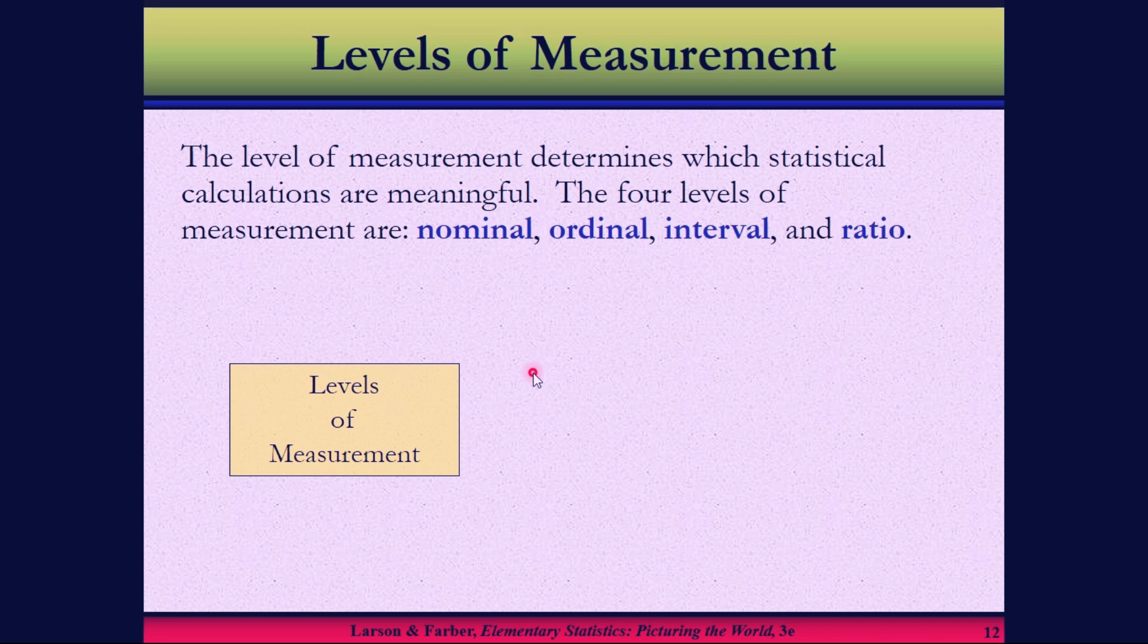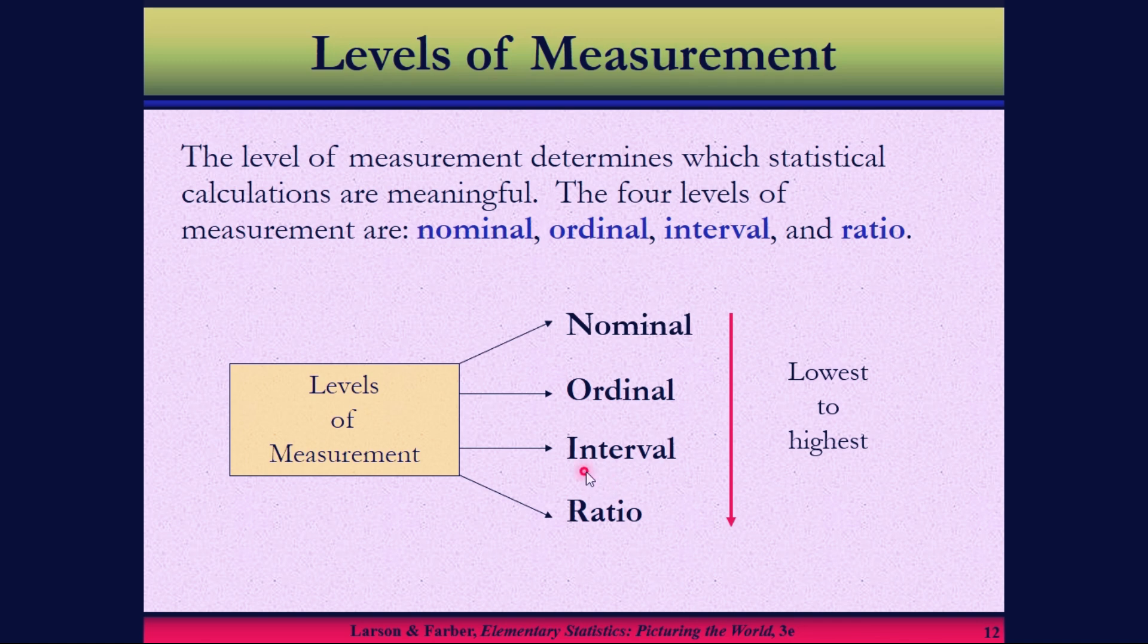There are four types. The first one is nominal, the second one is ordinal, the third one is interval, and the fourth one is ratio. The order goes from lowest to highest.